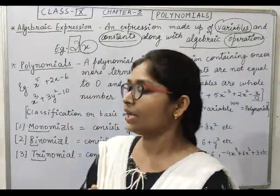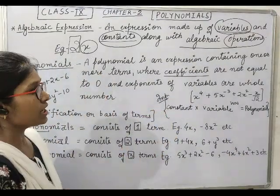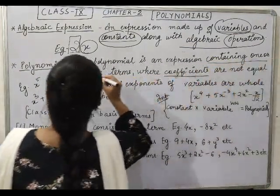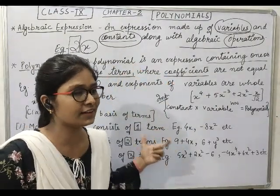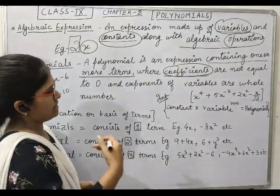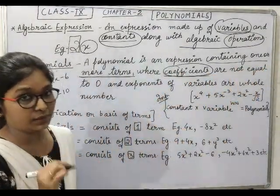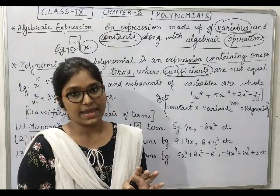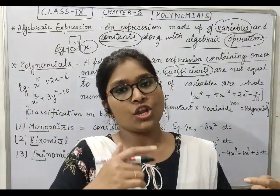Now further, we'll come to our main topic that is polynomials. As per the definition: a polynomial is an expression containing one or more terms. Terms - you studied in your previous class, types of terms. Further also we'll study more terms where coefficients - I am again pressurizing on one word - coefficients are not equal to zero. The coefficients can be anything except zero. Or we can say that non-zero integer.